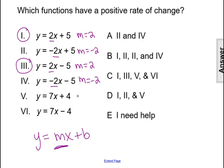The fifth function has a slope of 7 from the coefficient of x, so that positive 7 means that function 5 also has a positive rate of change. Function 6 also has a slope of 7 because the coefficient of x is 7, so that positive 7 slope means function 6 also has a positive rate of change.